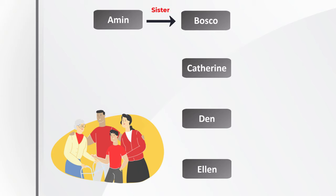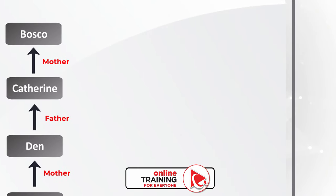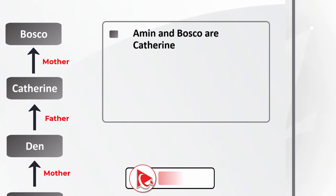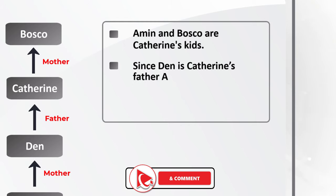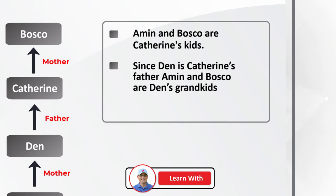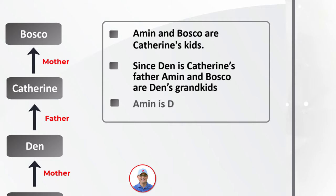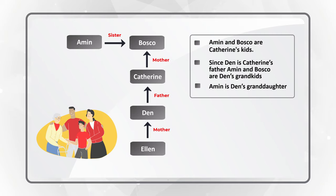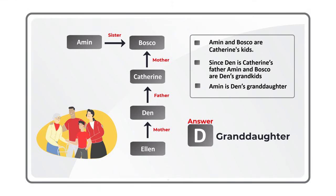From the diagram: Amin and Baska are Katherine's children. Since Dan is Katherine's father, Amin and Baska are Dan's grandkids — which means Amin is Dan's granddaughter. The correct choice is D, granddaughter.